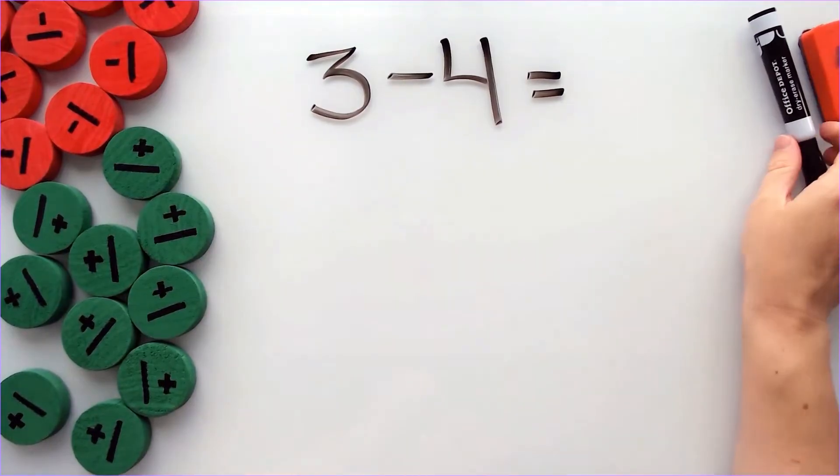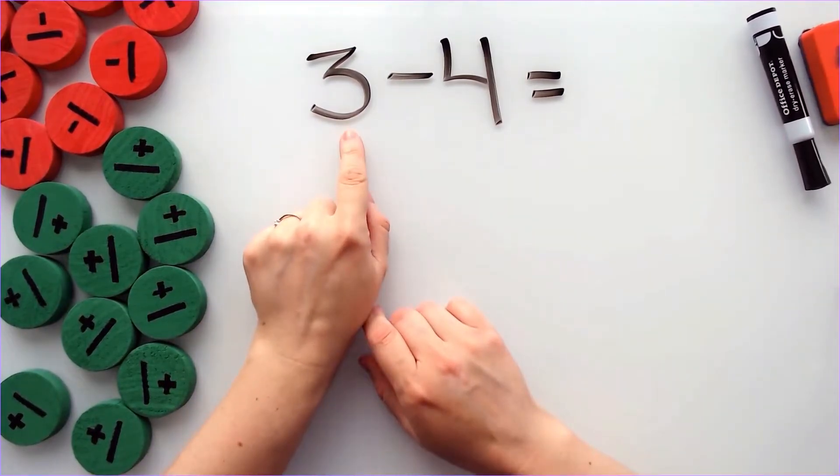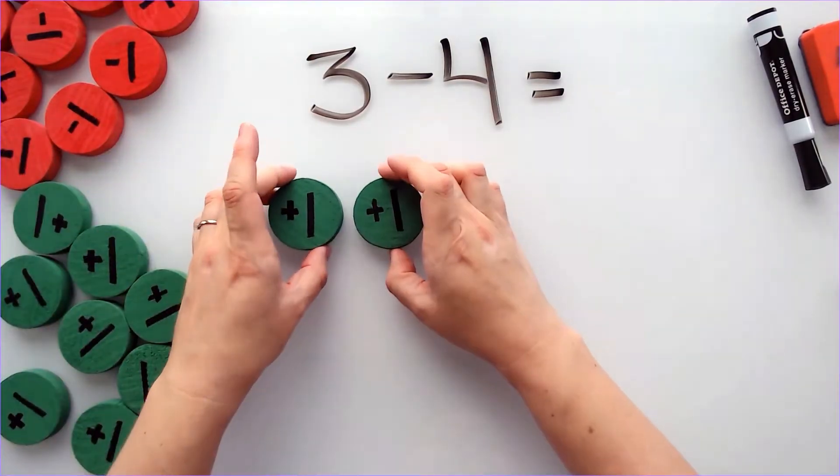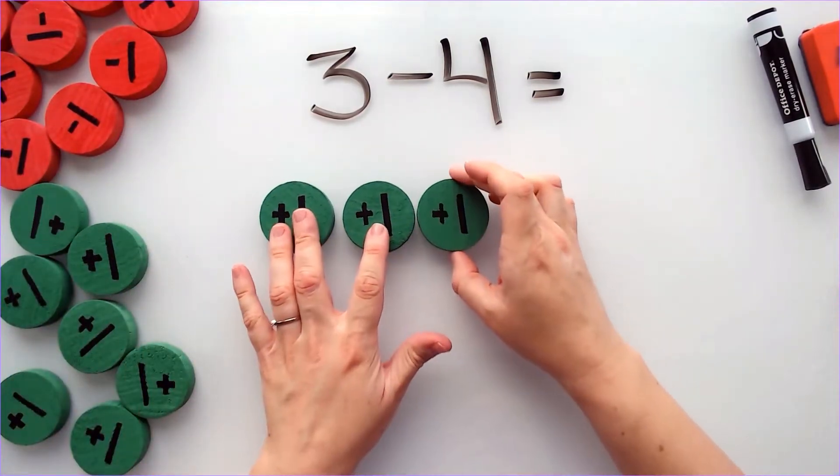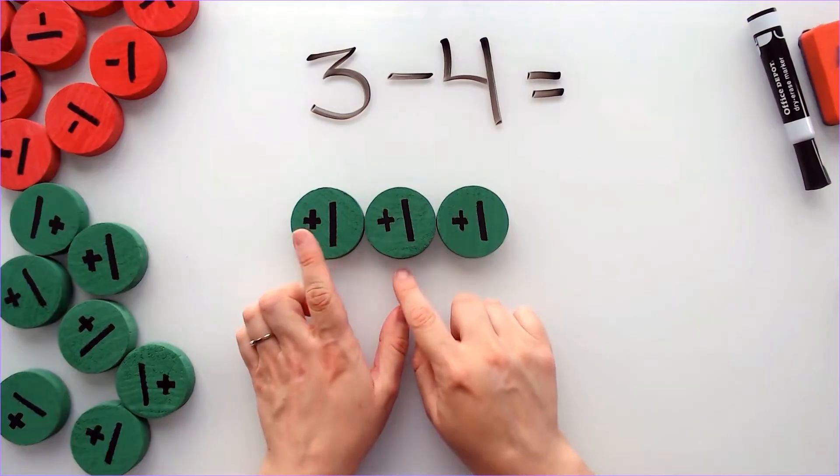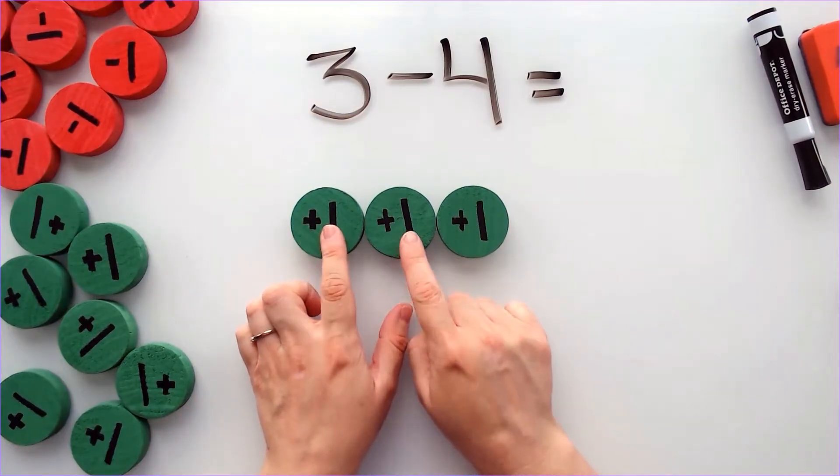Well, first what I'm going to do is I am going to take 3 positives. In other words, 3 greens, because the greens are each worth a positive 1. So there's 1, 2, 3.